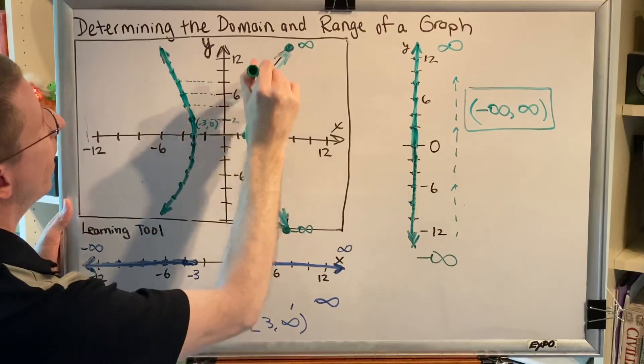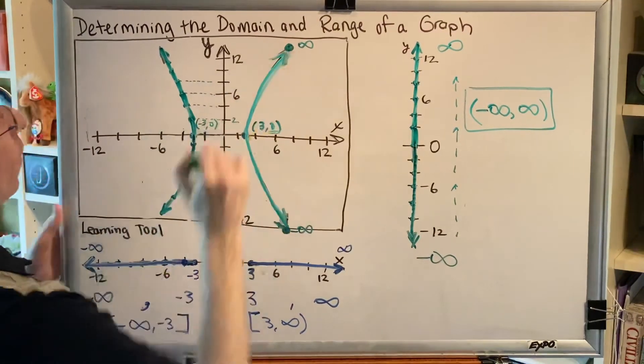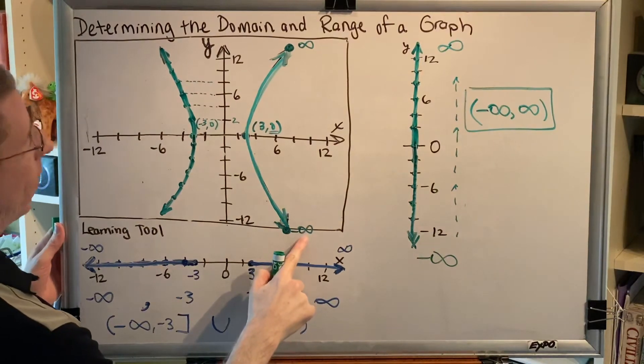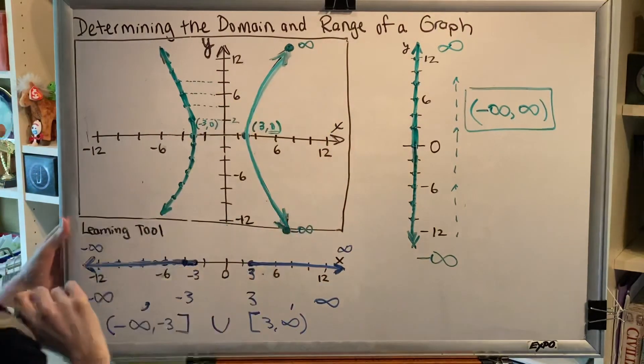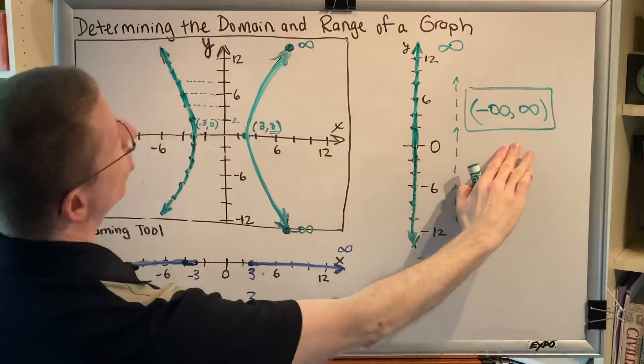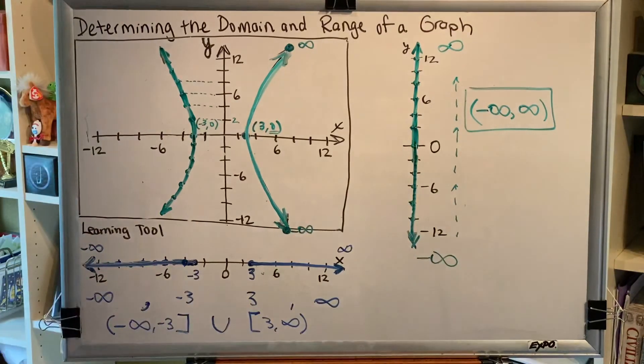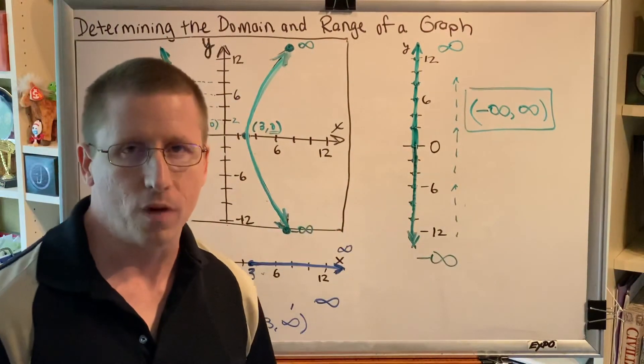And therefore, we have all of the numbers in between negative infinity and positive infinity, which is the justification for why our range is this interval, negative infinity to positive infinity.